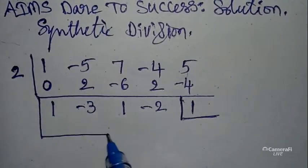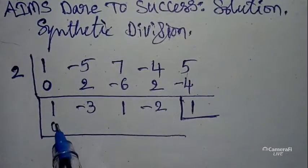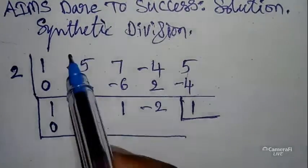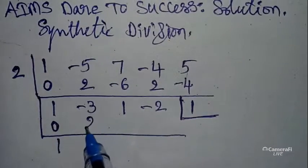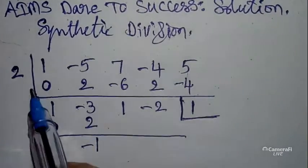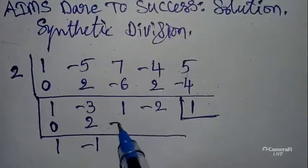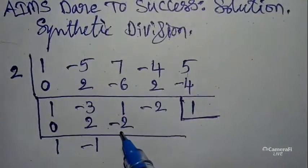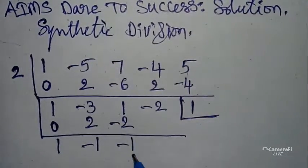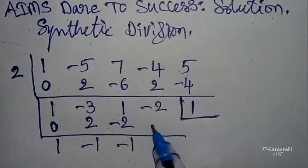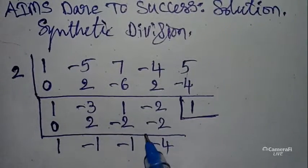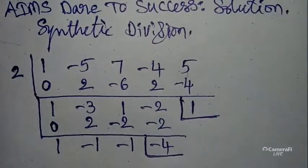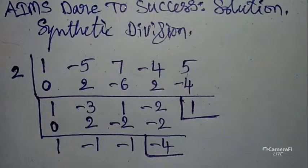Take the next box. Write first value 0 — from the synthetic division concept. 1 + 0 = 1. Cross multiply: 1 × 2 = 2. 2 + (-3) = -1. Cross multiply: 2 × (-1) = -2. 1 + (-2) = -1. Cross multiply: 2 × (-1) = -2. Then -2 + (-2) = -4. Keep this — I will tell you later why I am writing like this.